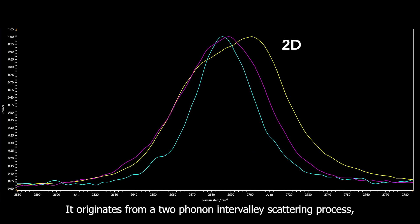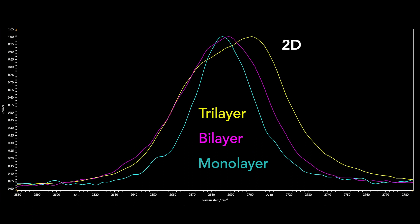It originates from a 2-phonon intervalley scattering process and it can also be used to identify the number of layers in graphene films because the position and width of the band change as the number of layers increases.